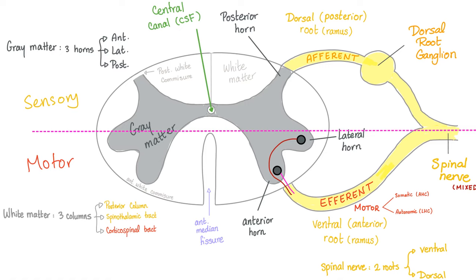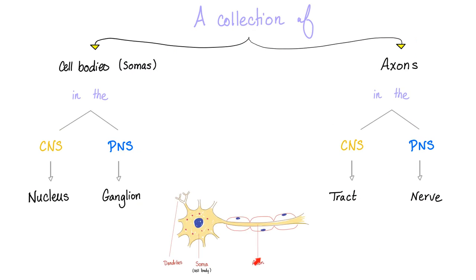That's why spinal nerves are always mixed — they have sensory and motor in the same nerve. The structural unit of the nervous system is called the neuron, which has soma and axon. A collection of somas in the central nervous system is a nucleus; in the peripheral nervous system, it's called a ganglion. That's why the dorsal root ganglion is outside the spinal cord — it has to be peripheral. A collection of axons in the CNS is called a tract; in the PNS, it's a nerve. That's why cranial nerves and spinal nerves are peripheral.